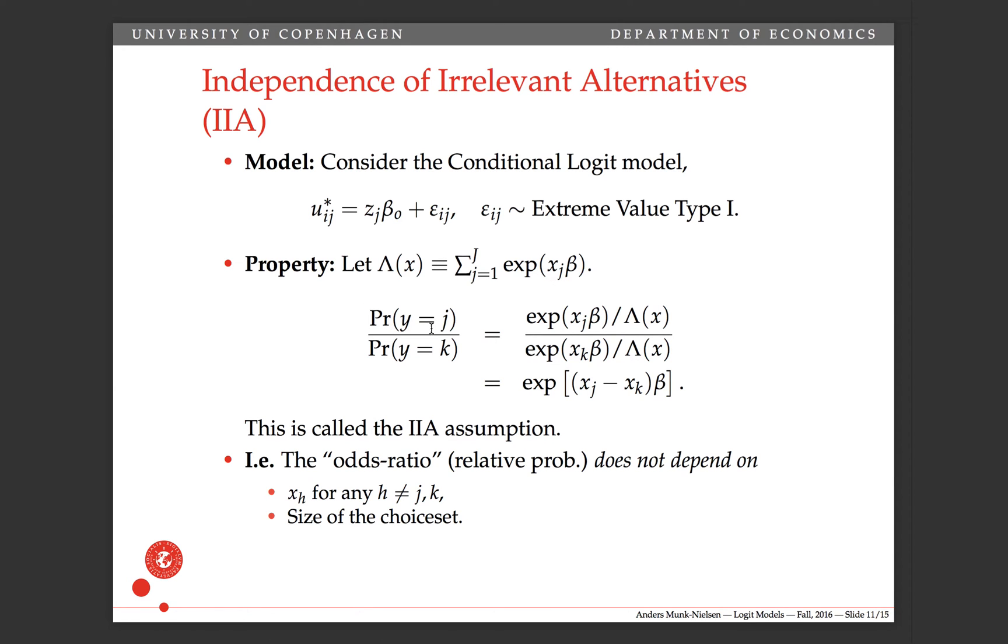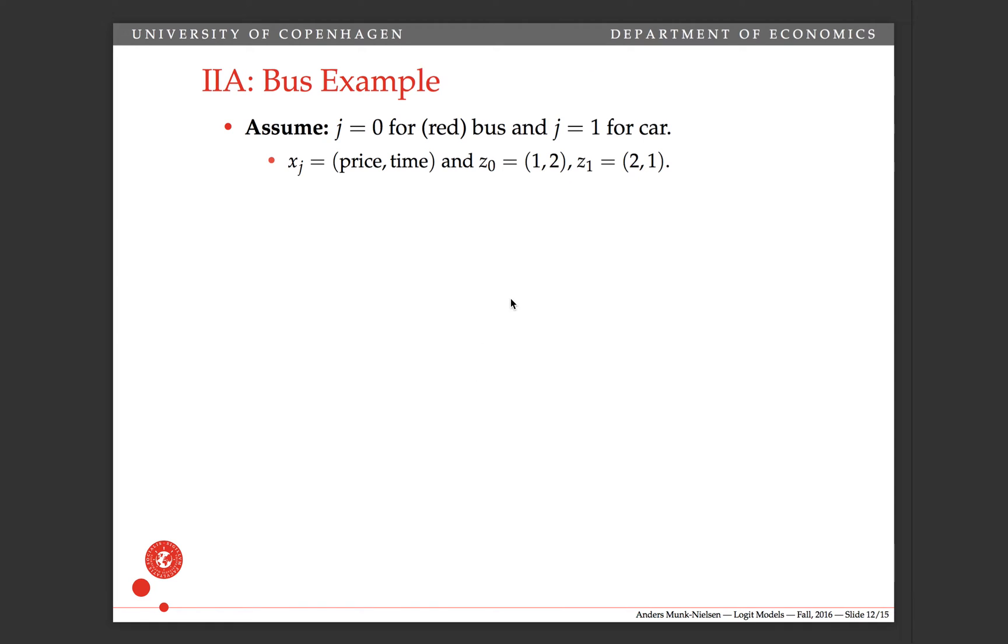And this thing here is called the odds ratio. It's very much used in sociology, they talk about odds ratios a lot. Alright, so I'm going to illustrate why this is important in two ways. Firstly, with a bus example.